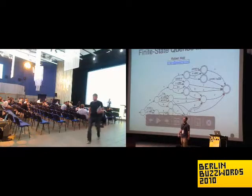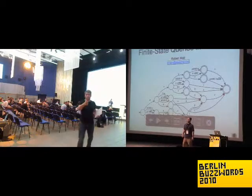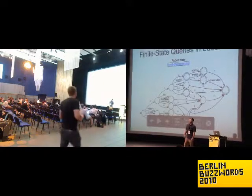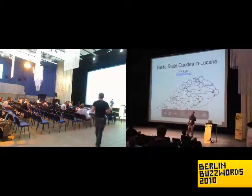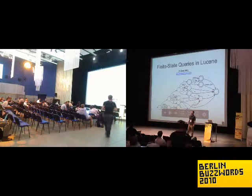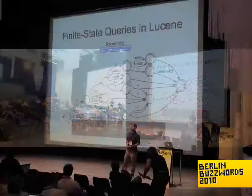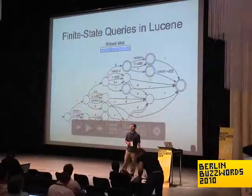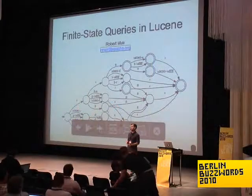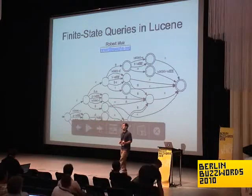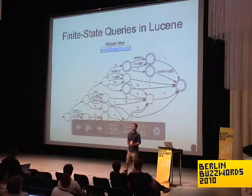This is a talk about how you can do inexact matching with Lucene. Typically when you do a Lucene search, it's really an exact match, and that's part of what makes it fast. But oftentimes you want to do an inexact match, and historically that's not been very scalable. This is a way to improve it — faster and more scalable.